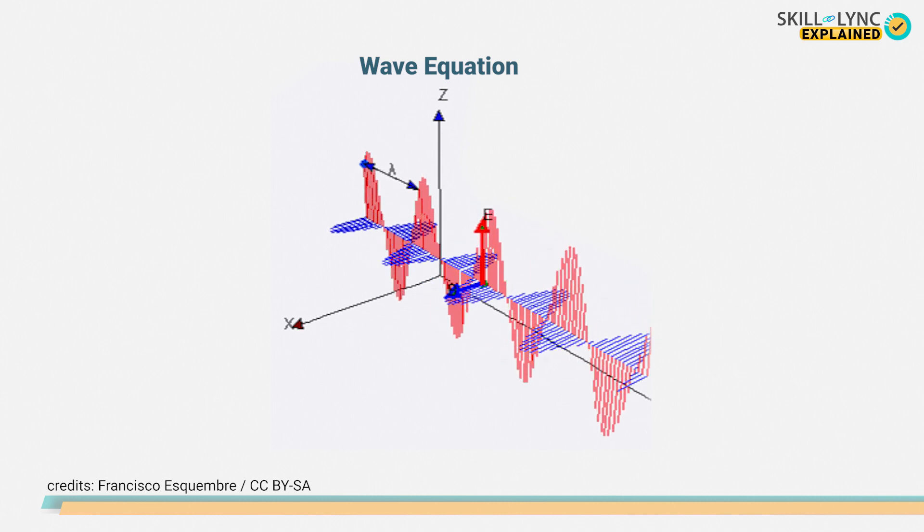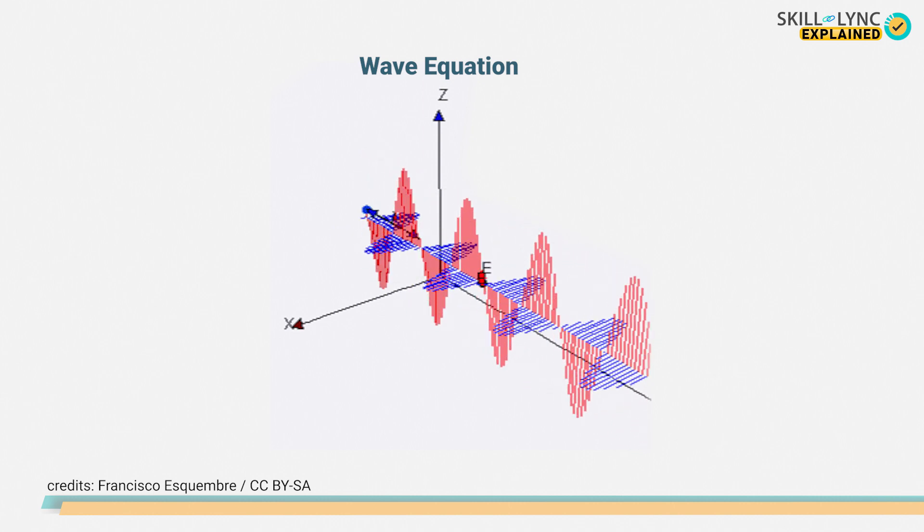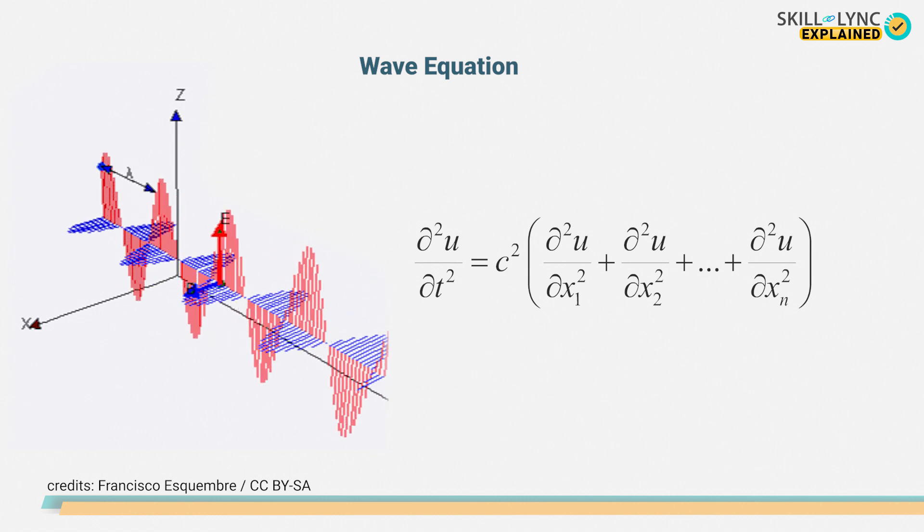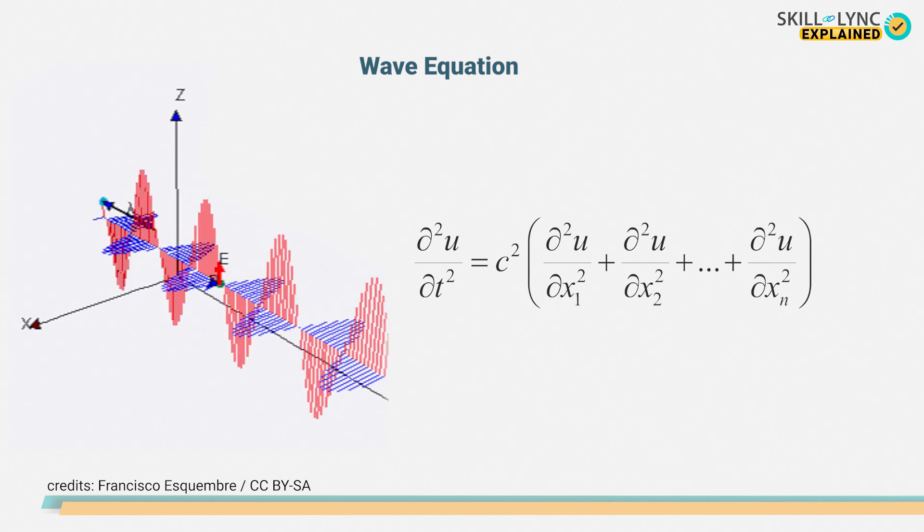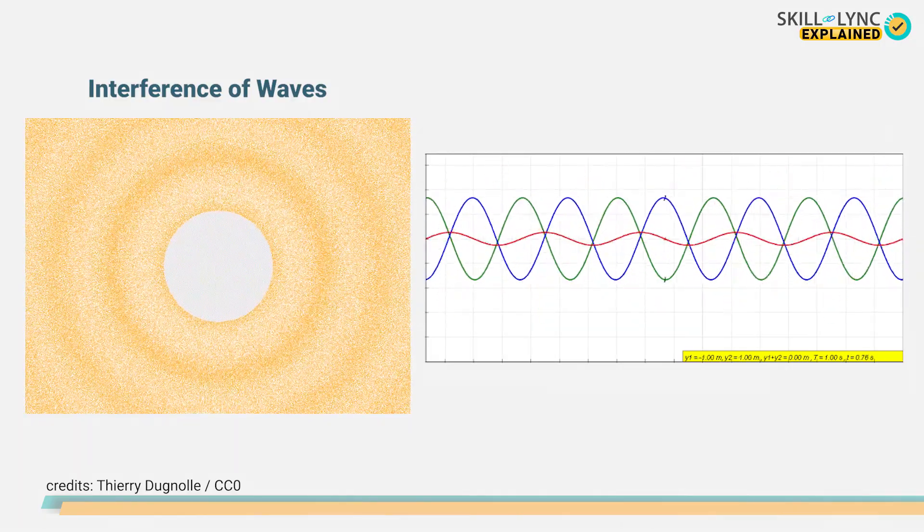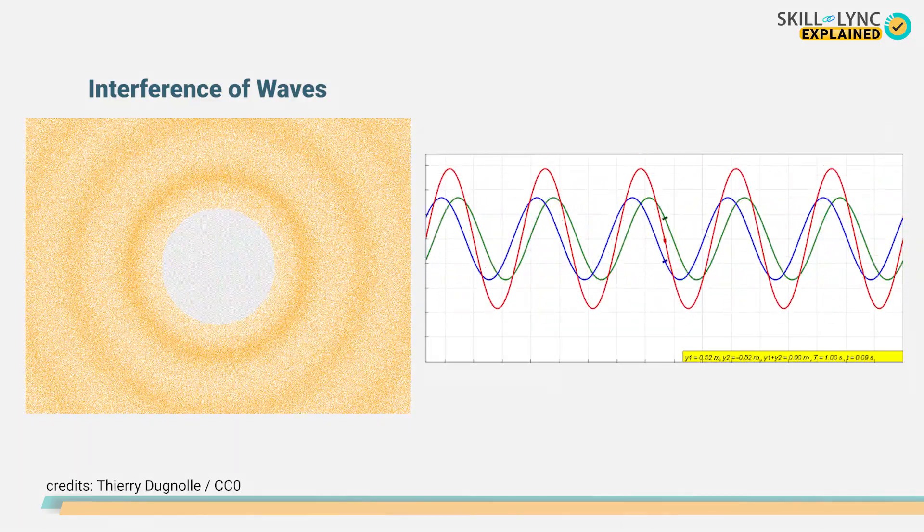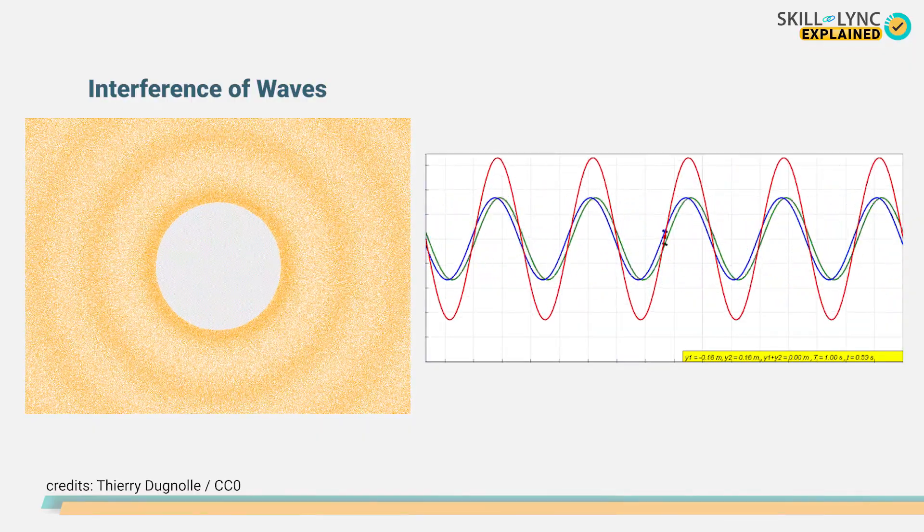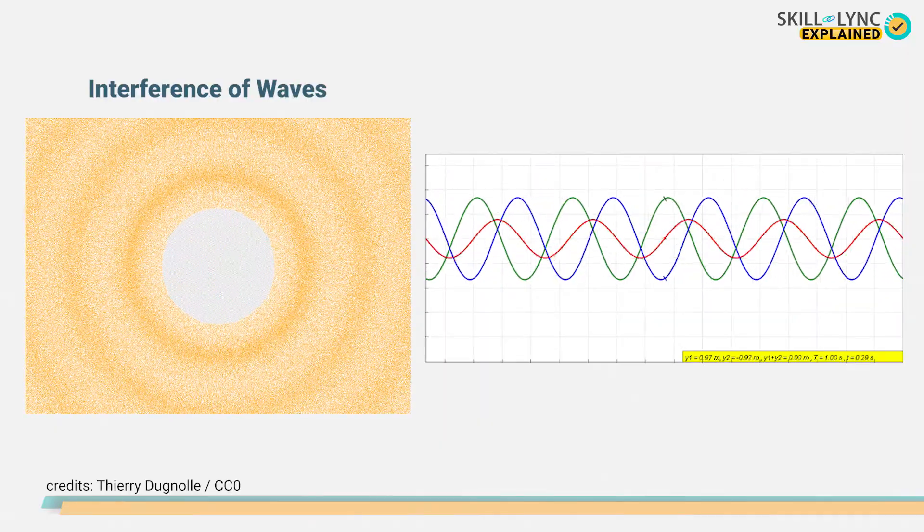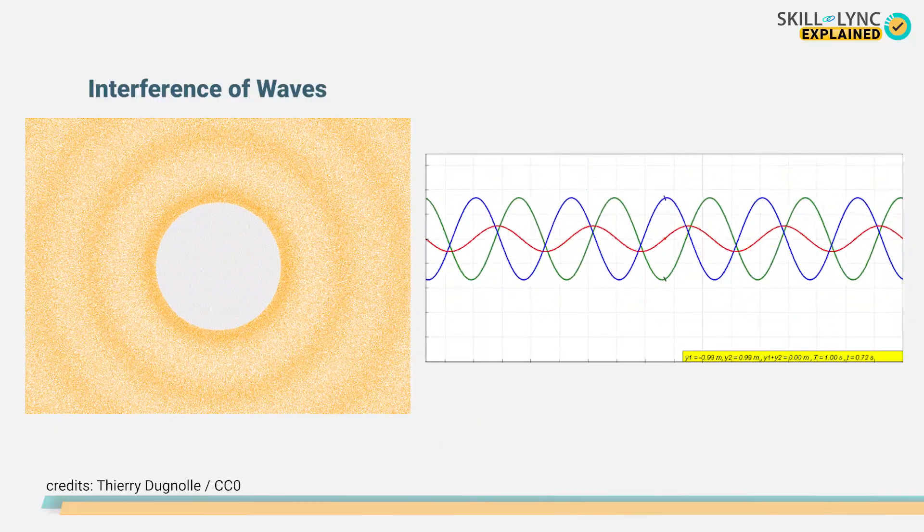Take for example the propagation of light through space which can be explained by a second order partial differential equation called the wave equation. This equation also explains the propagation of sound in the atmosphere. The reason behind the same equation describing both light and sound waves is that both of them are essentially energy propagating through a medium.